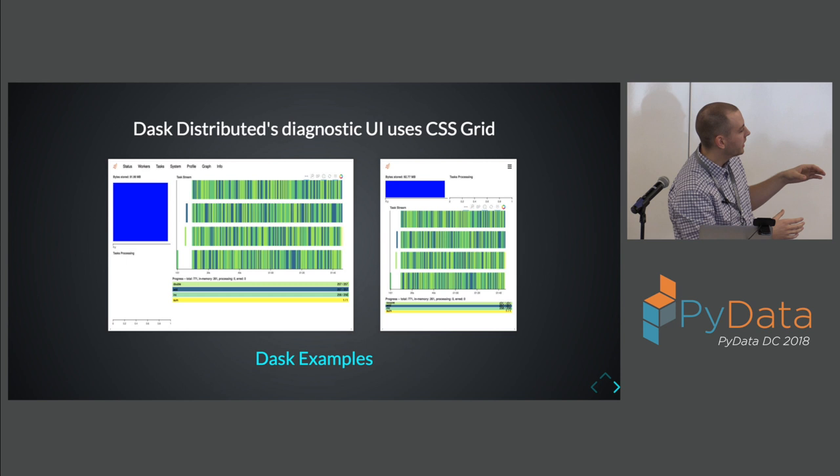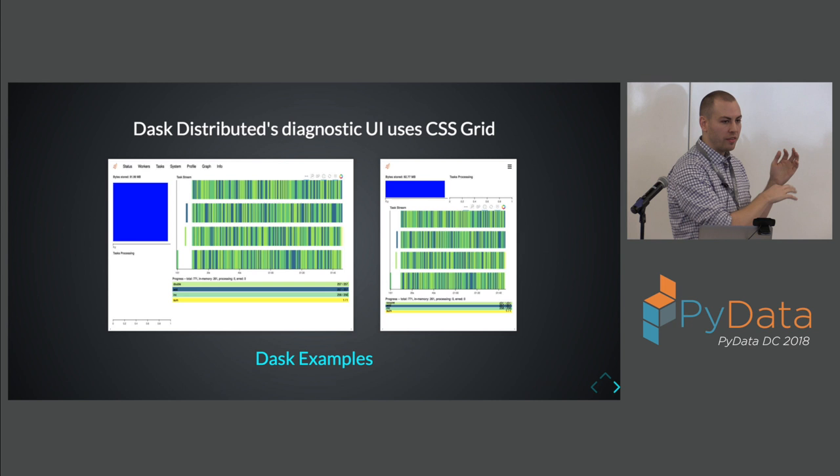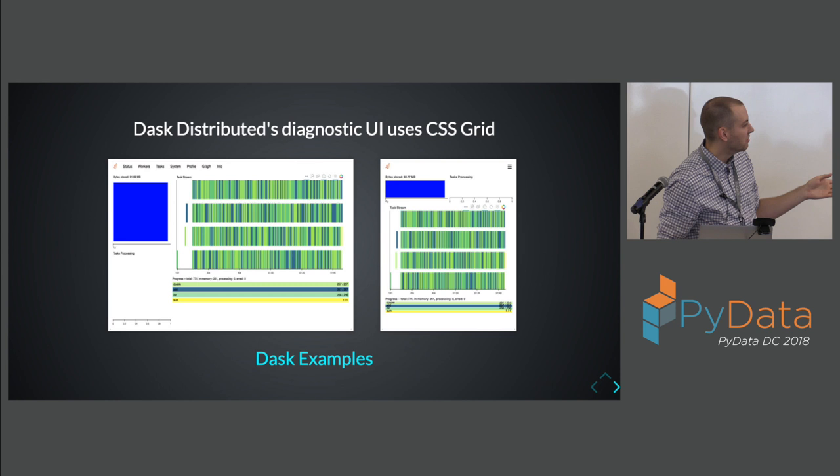A common workflow for Dask folks is to have a Jupyter notebook on one half where they're doing interactive computation, and then viewing the diagnostic dashboard on the other. This is a fantastic use of writing their own Jinja templates and writing CSS to make it work.